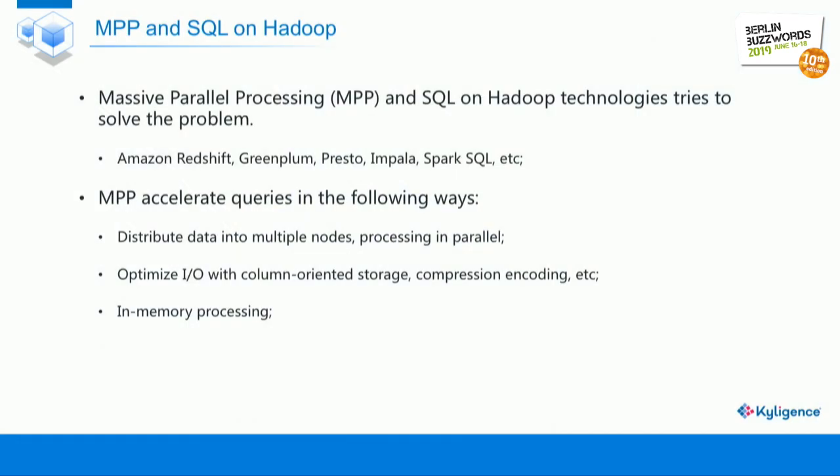We investigated the solutions in the domain. There are mainly two technologies. One is the massive parallel processing solution. The other is a SQL-on-Hadoop solution. Examples include Amazon Redshift, Pivotal Greenplum, and also Presto, Impala, and Spark SQL.